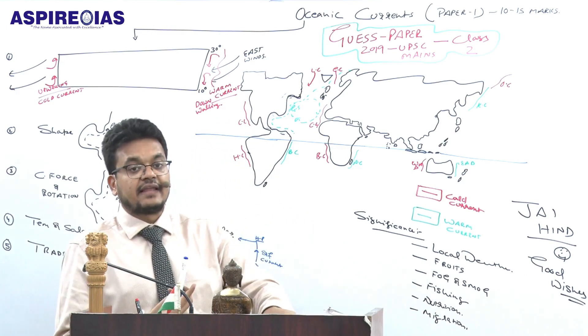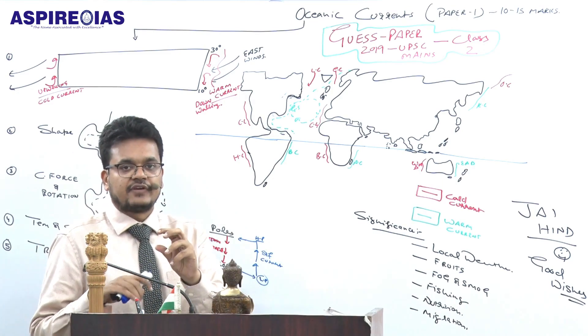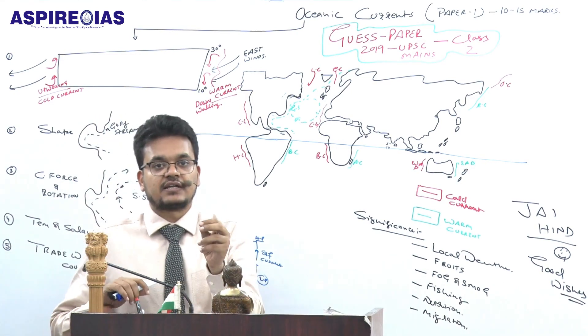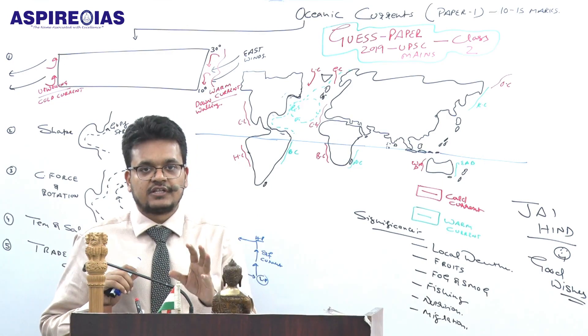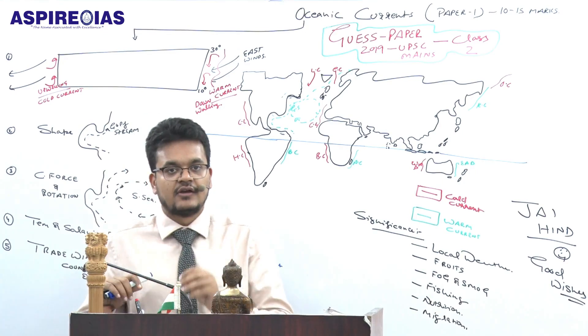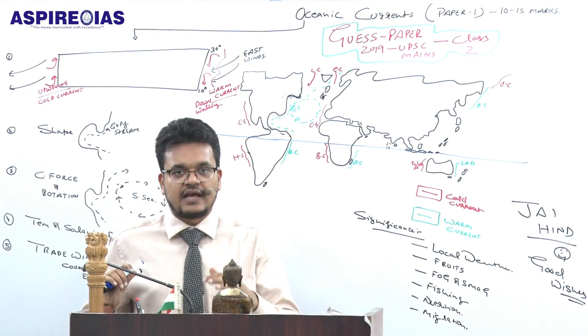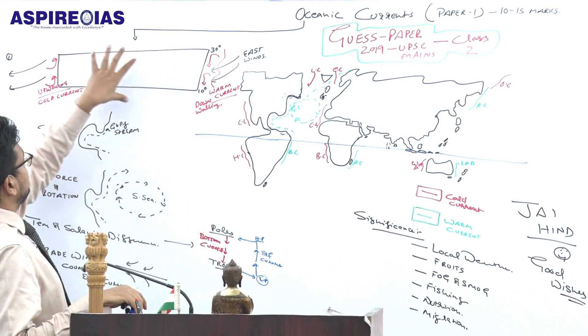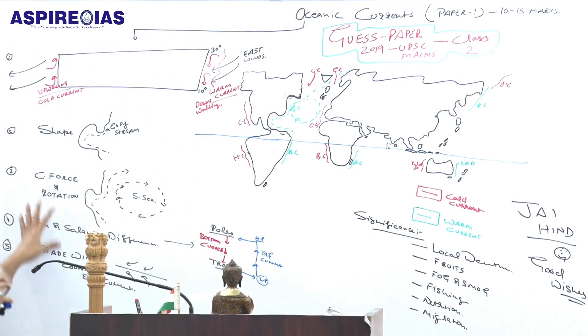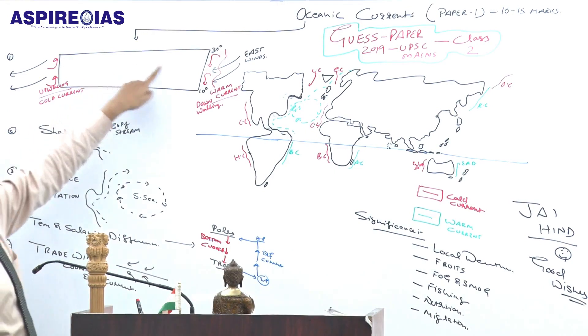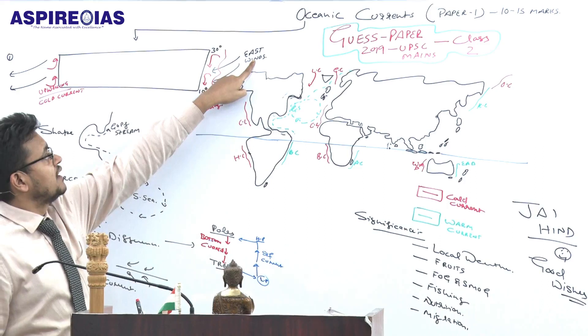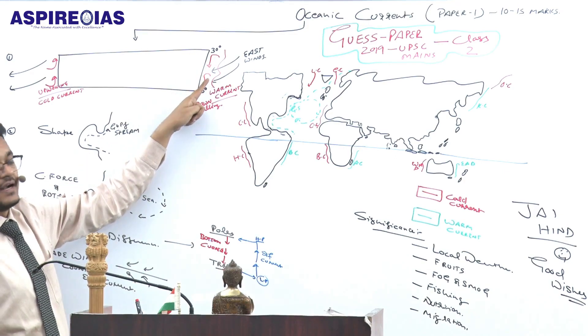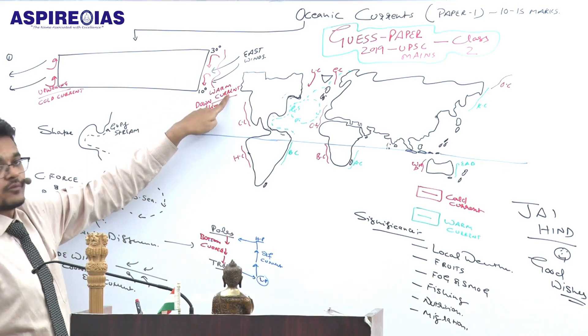The explanation: Oceanic currents are the manifestation of differential solar energy over the earth. This should be your starting. We can select five major reasons. The first reason is easterly winds. The easterly winds on the eastern side act as onshore winds, compiling warm water in downwelling zones, resulting in warm current formation.